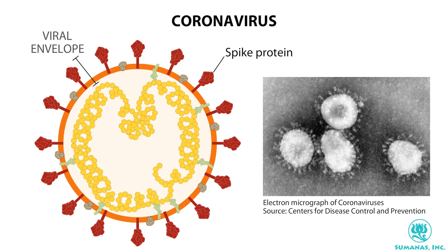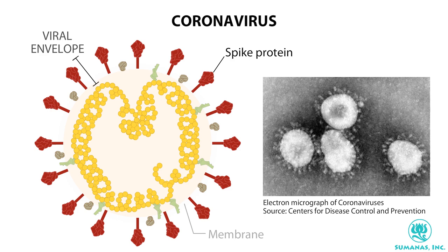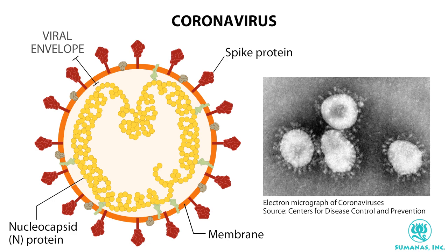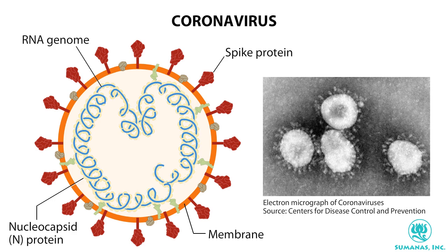The viral envelope contains the spike proteins and a few others embedded in a lipid membrane. Inside, the genetic material is coated in proteins called nucleocapsid, or N-protein. The genetic material is RNA, rather than DNA.